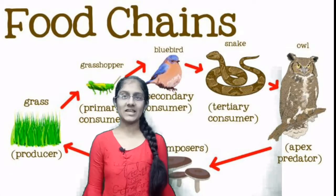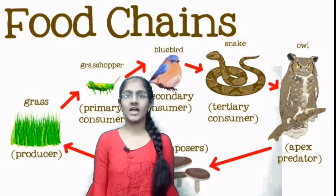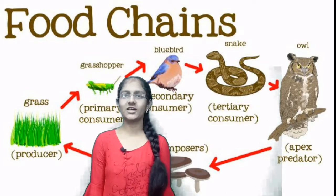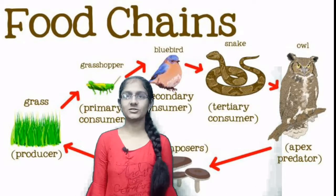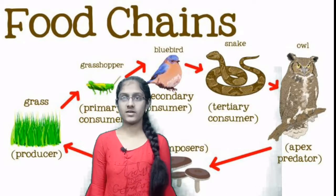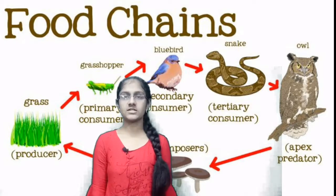Hi friends, my name is Reshika Ravindarita Kekar. I am a 9th grade student. I will teach you a studying subject. Lesson number 7: Energy Flow in an Ecosystem.